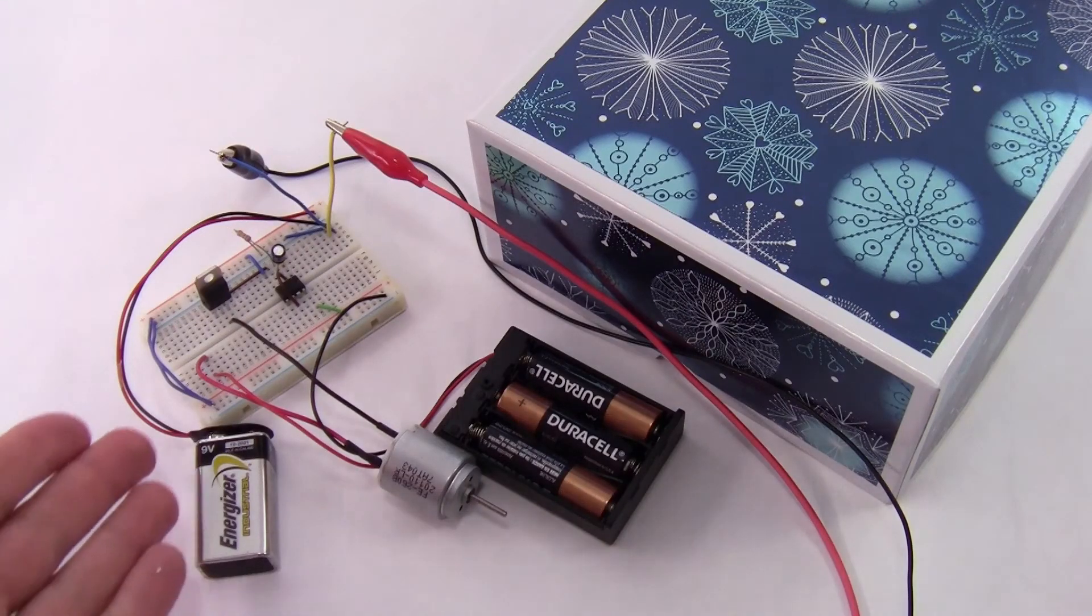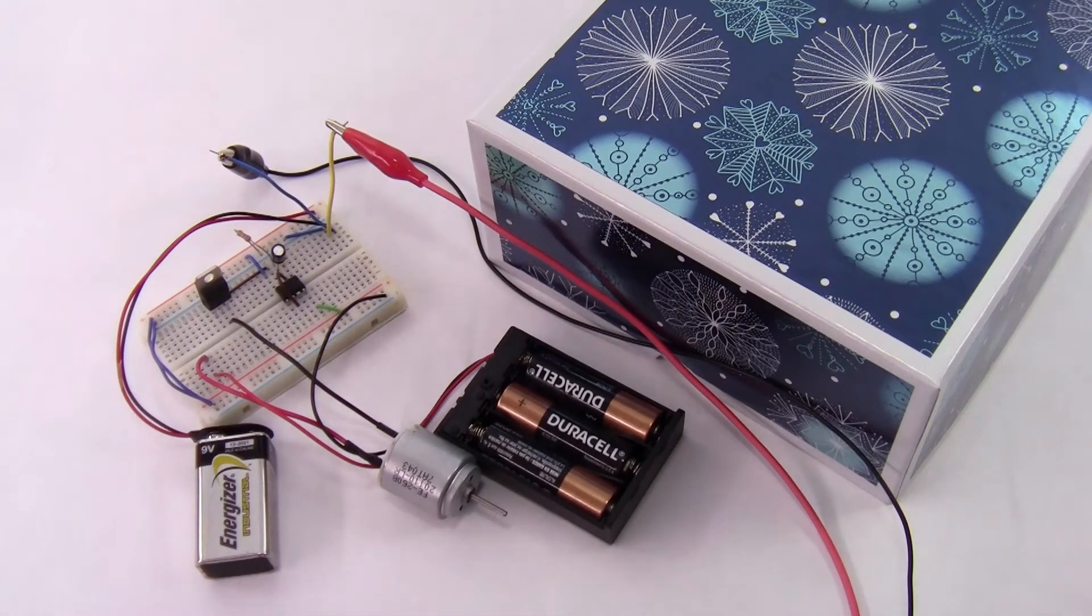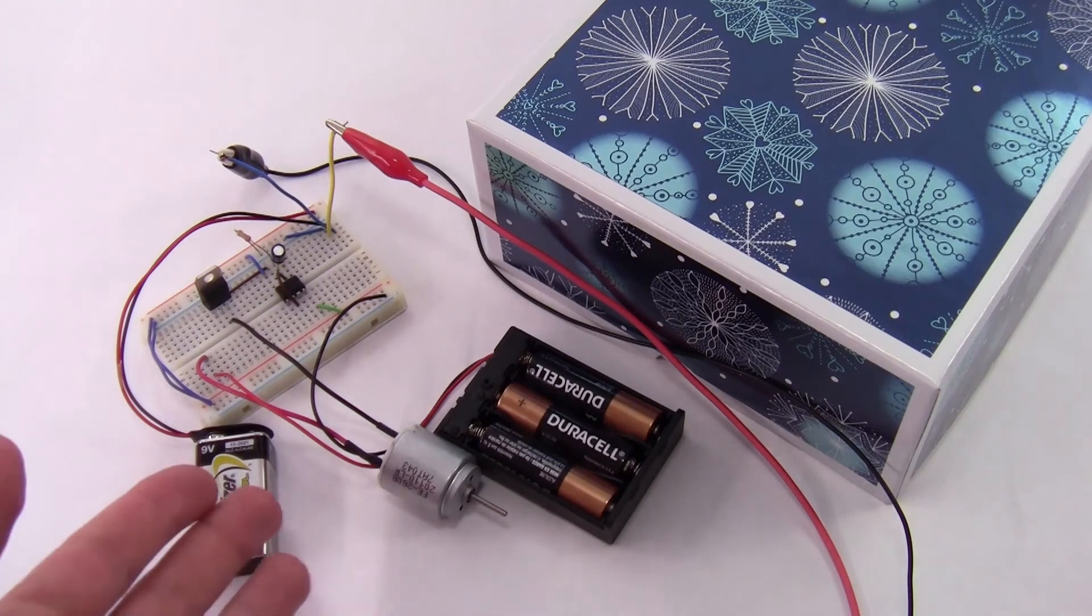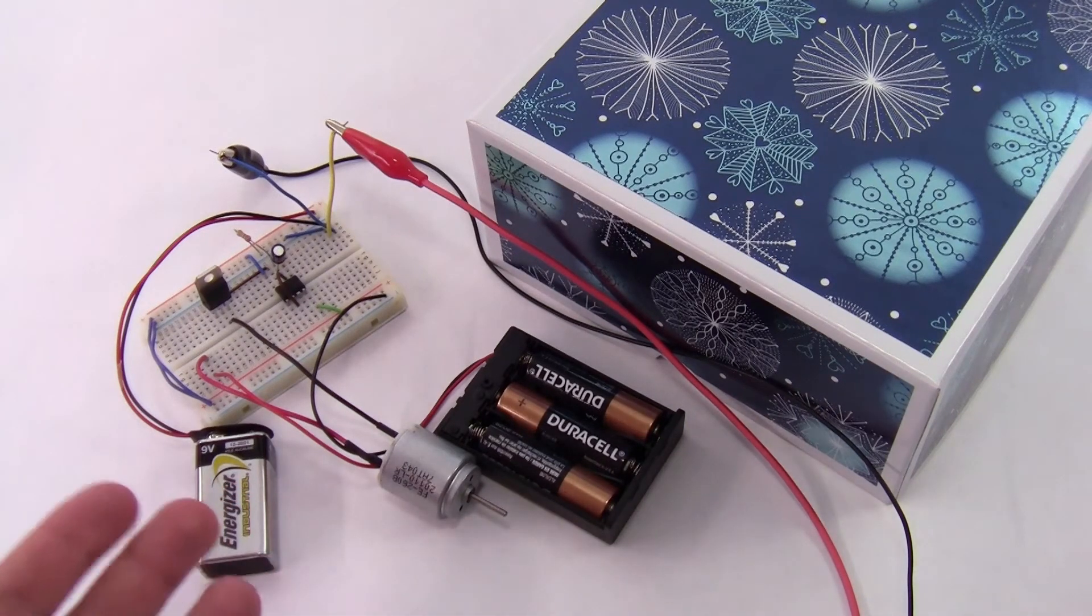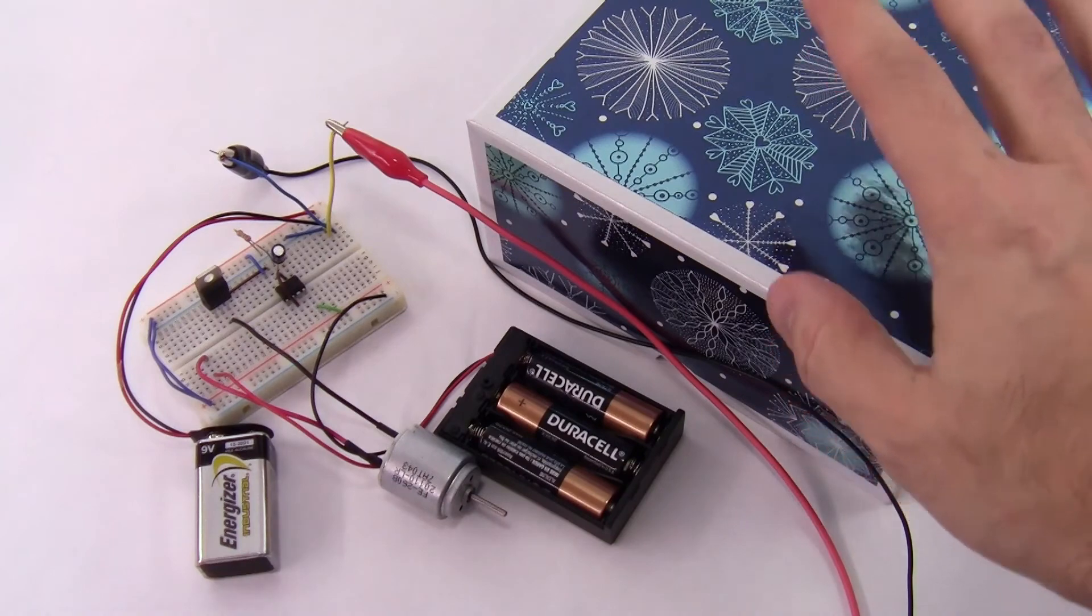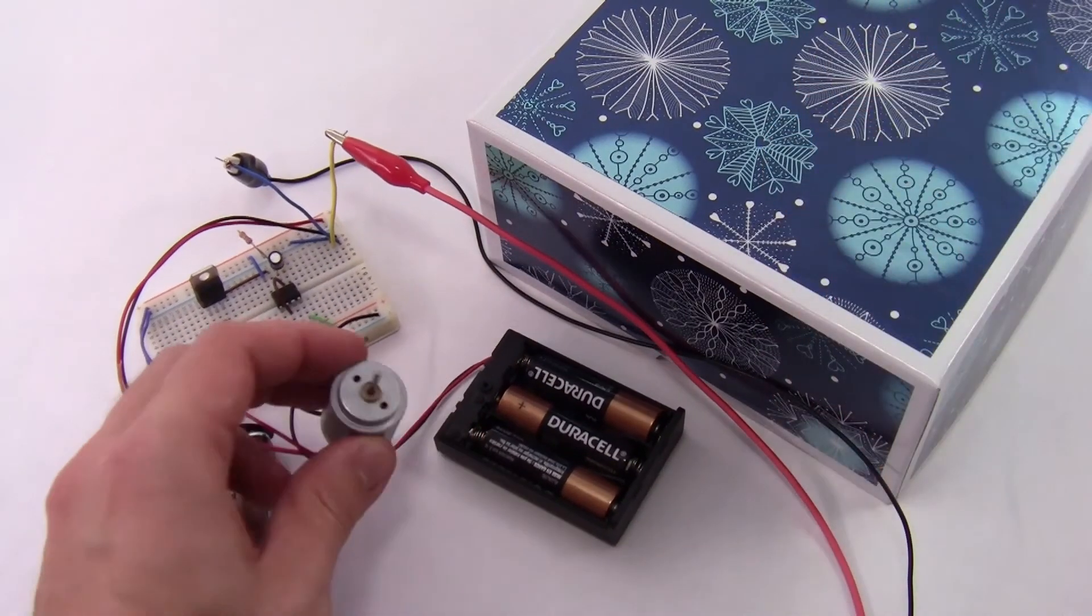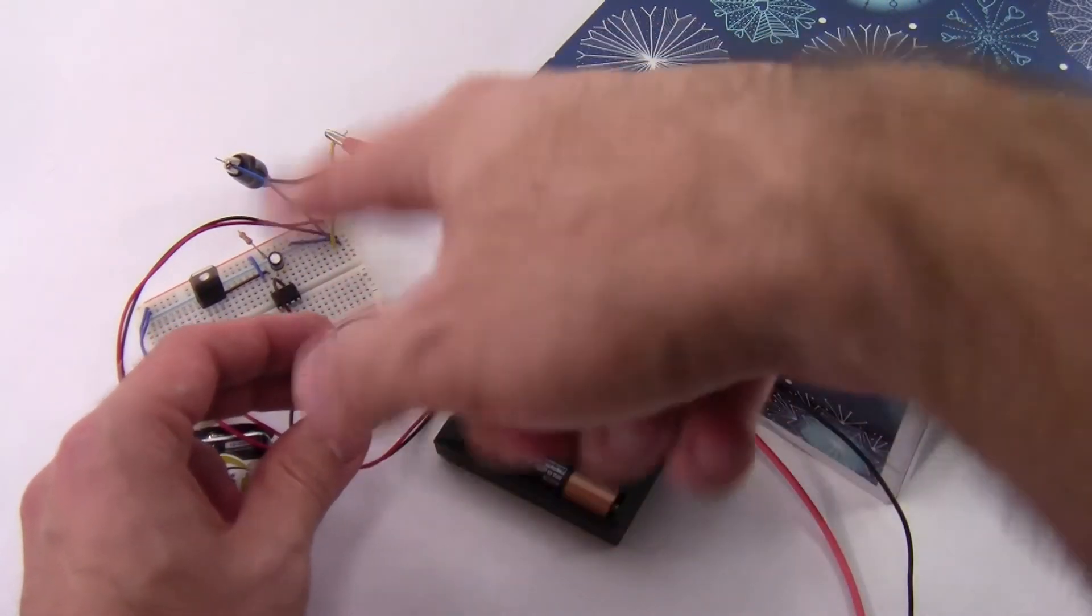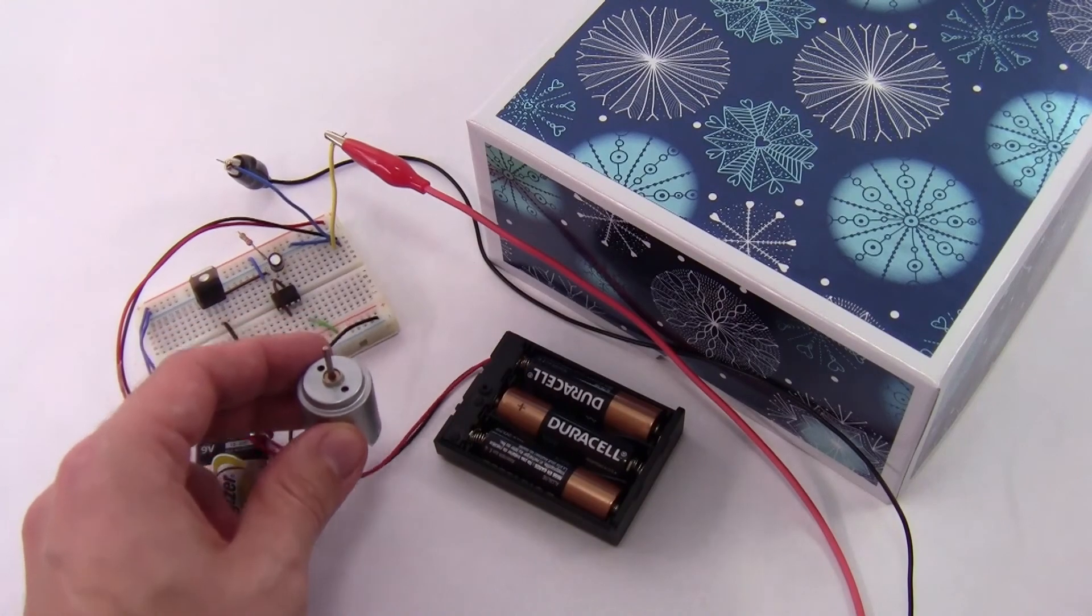Now obviously this is all a little bulky because I have built it on a big breadboard as a demonstration here but you can imagine how you could shrink this down and either solder the components or use a smaller breadboard then fit everything inside a box. And again you would need a little cone to actually disperse the glitter when the motor starts spinning.